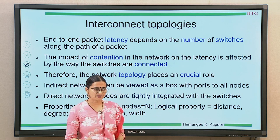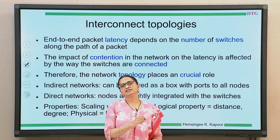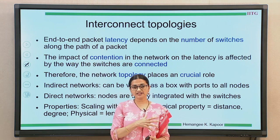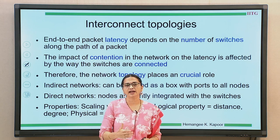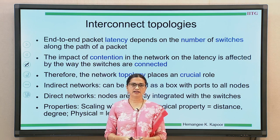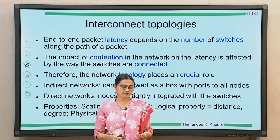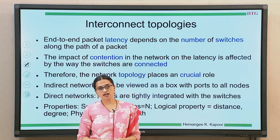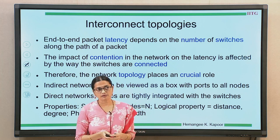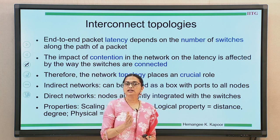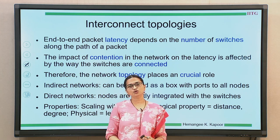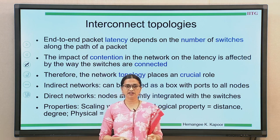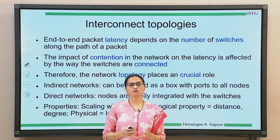Why do we need to understand this? Because when a packet is sent from a source to a destination, it has to go through this network. The physical connectivity matters because it decides how many paths are available, the bandwidth of every path, and how much latency a packet takes to reach from one node to the other. When there are contentions in the network — multiple packets flowing through it — having multiple paths available helps the transfer of data and reduces stall time. The topology helps reduce contention and improve latency.